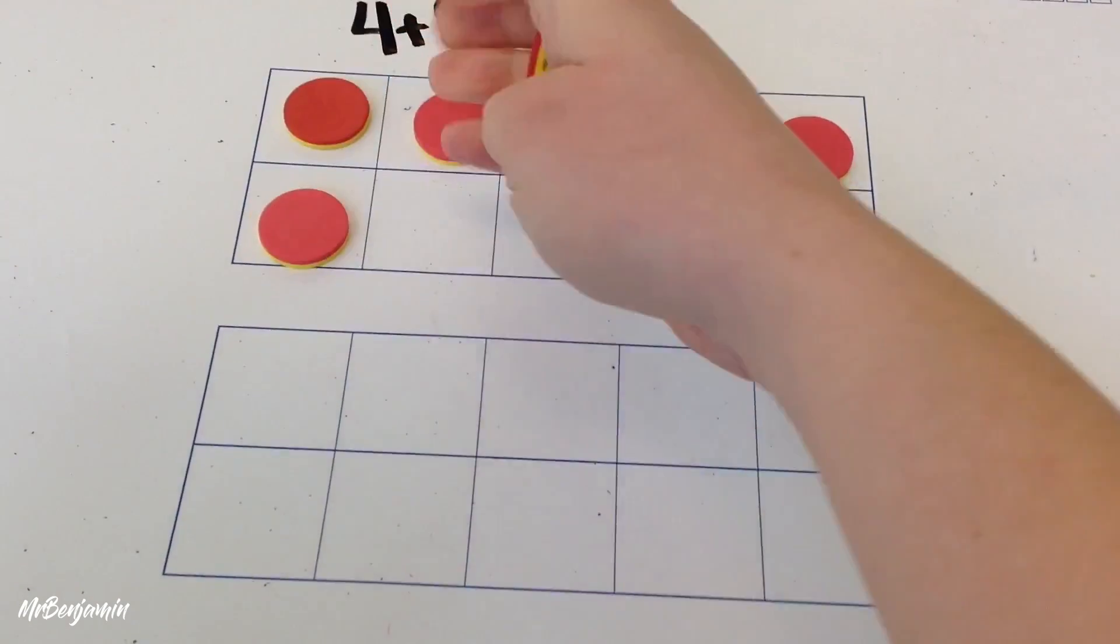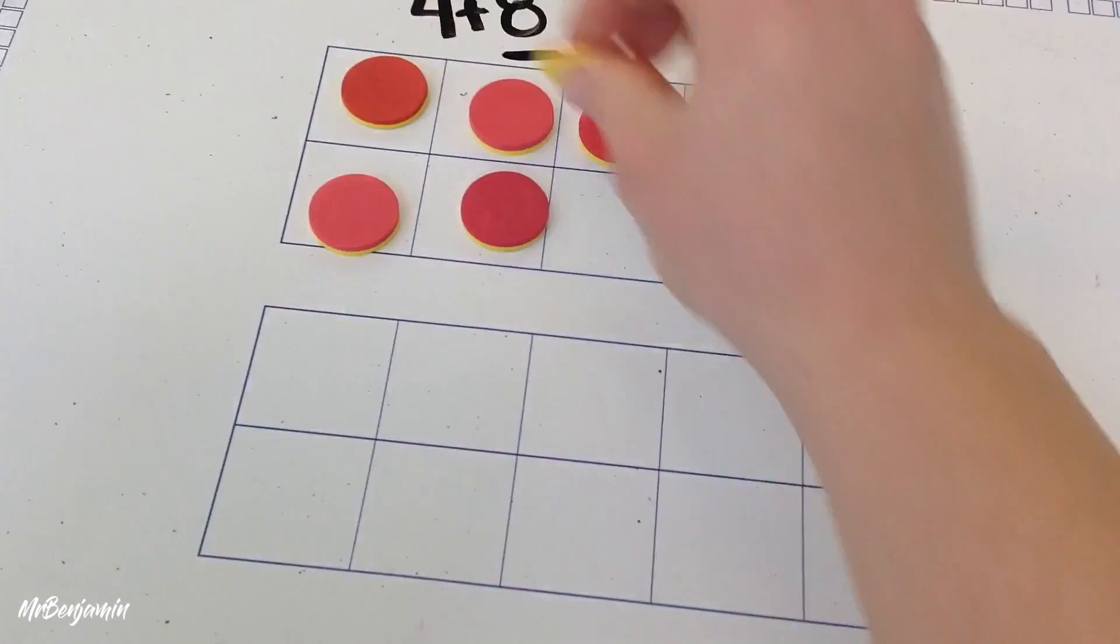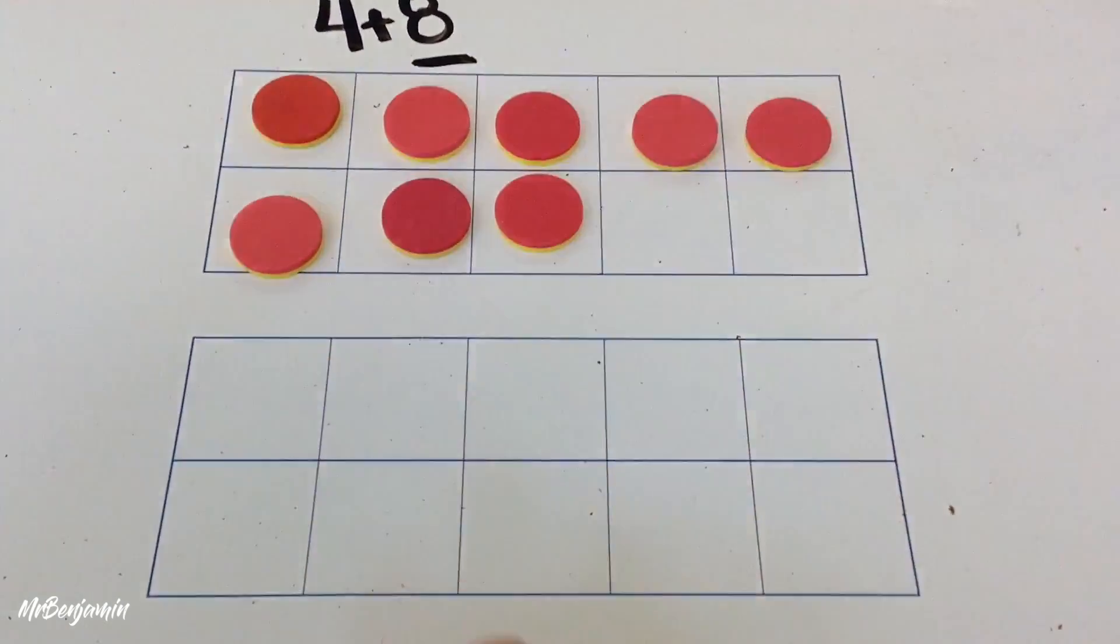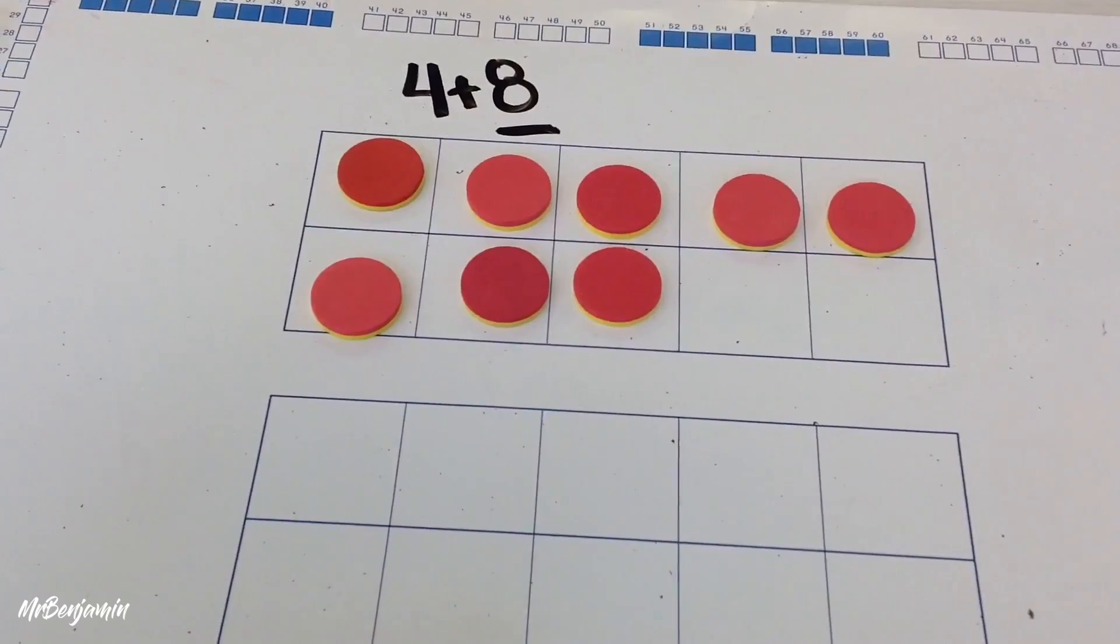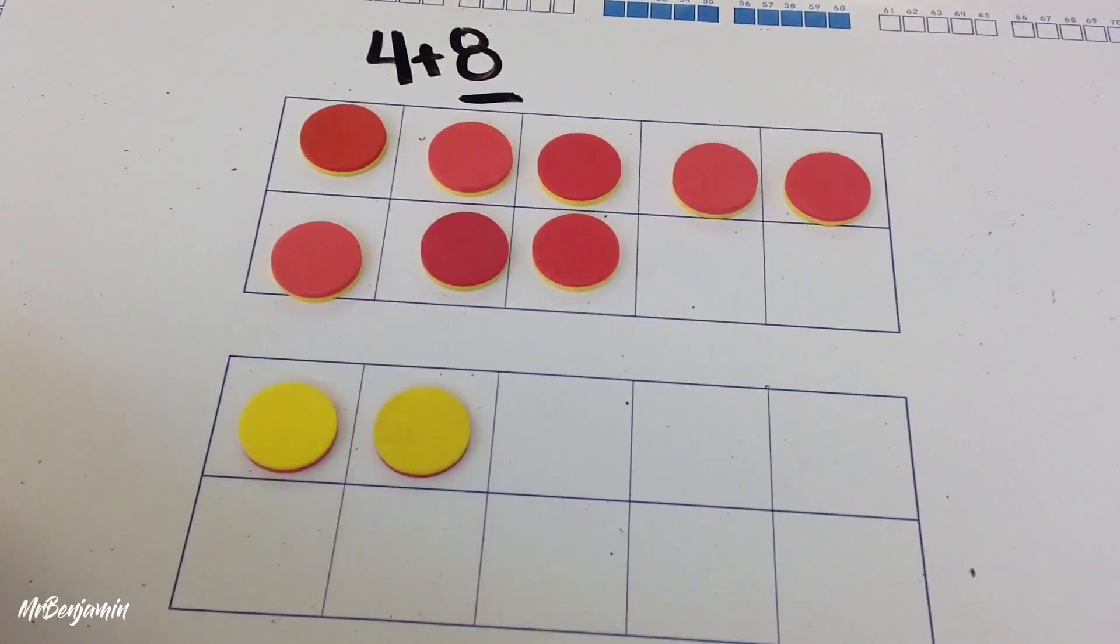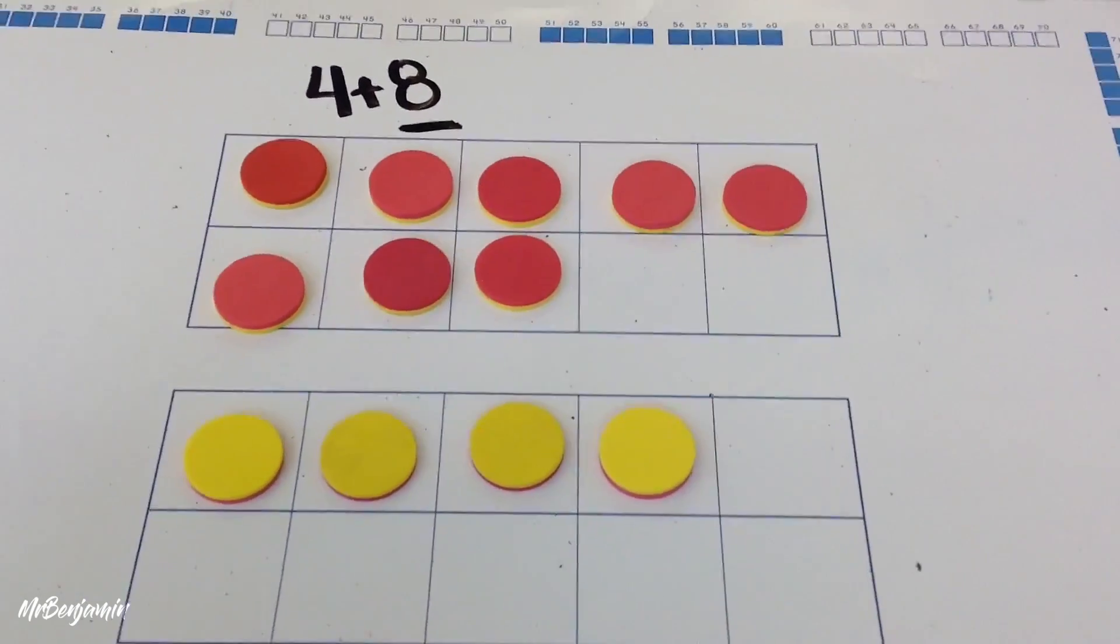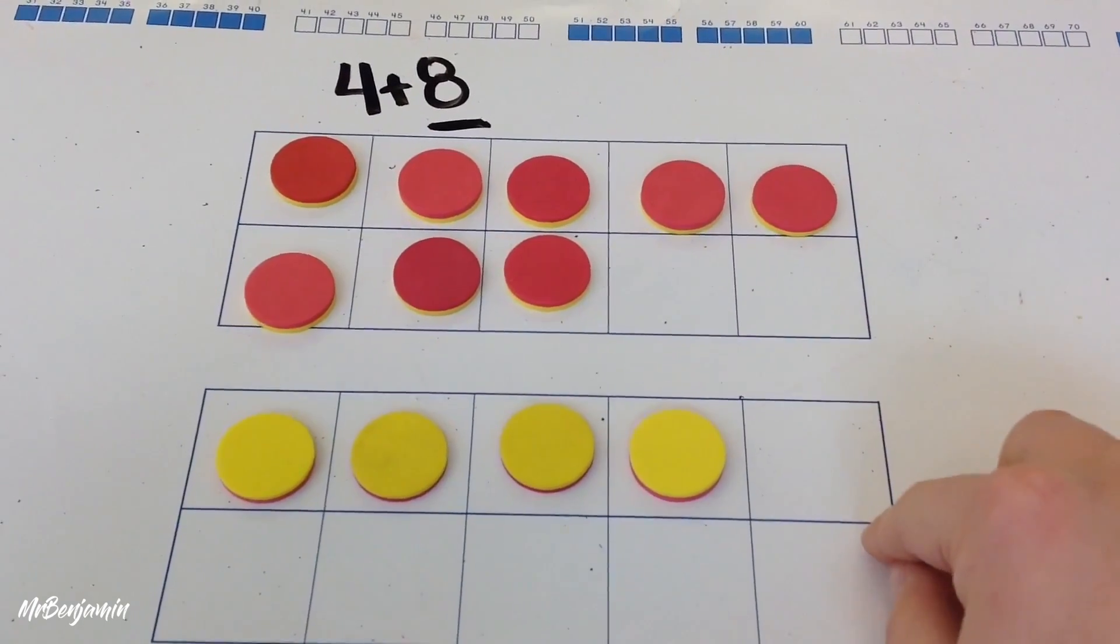5, 6, 7, 8. Oops, sorry. Now I take 4 and I put them in yellow on the other 10 frame. So I have 8 plus 4.